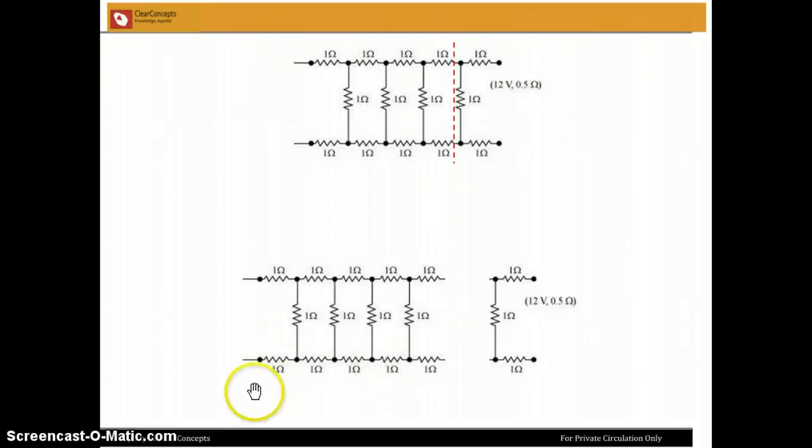But look at this portion on the left hand side. It's exactly the same as the original network because this is an infinite network, there is no difference. Changing from n to n minus 1 when n tends to infinity is just the same.